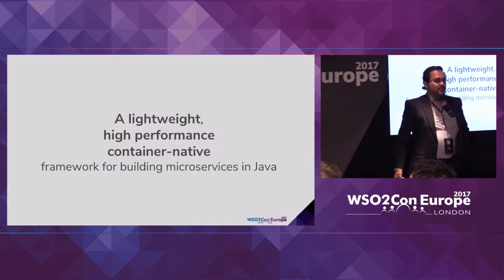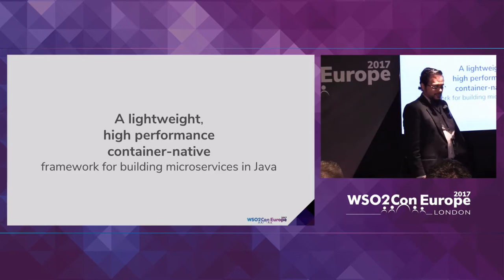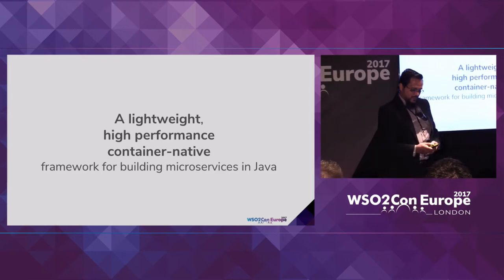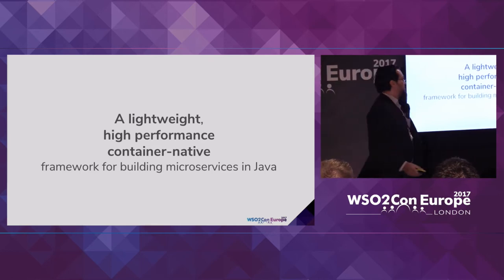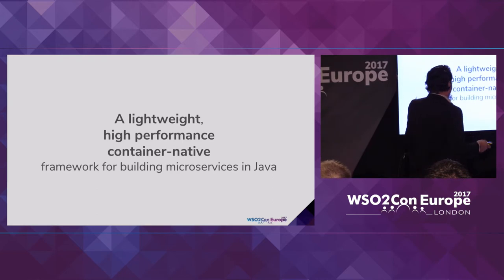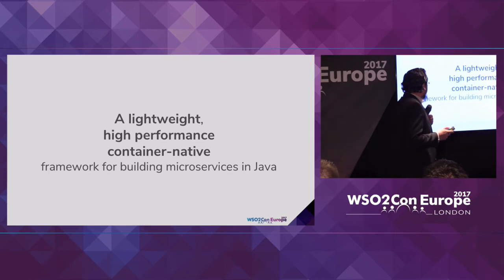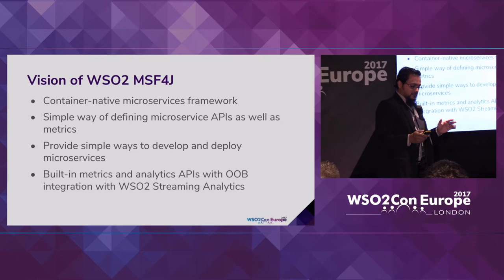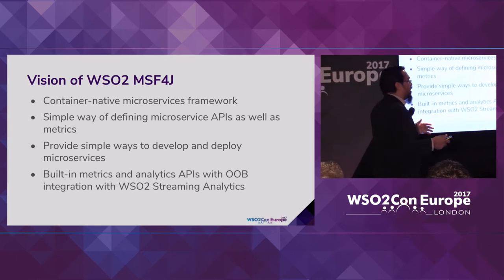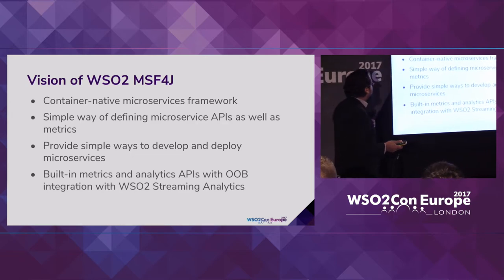So what is MSF4J? It's the microservices framework for Java. There are a number of Java microservices frameworks. When it comes to our core, we had some core design objectives: it has to be lightweight, high performance, and container native. During the next few slides we will go through how we achieve this, and look at some of the core features in MSF4J.